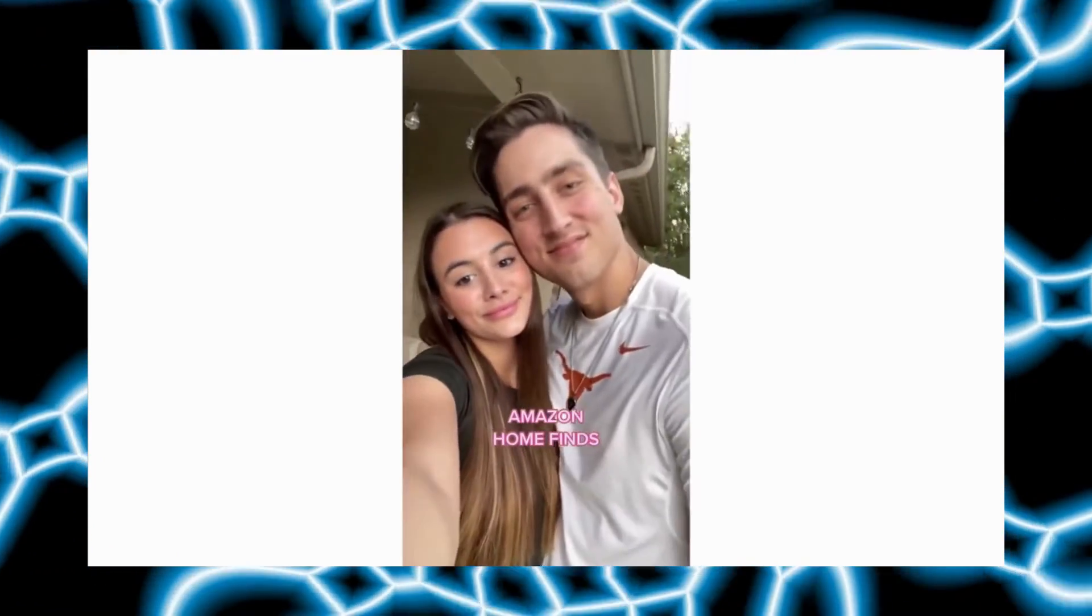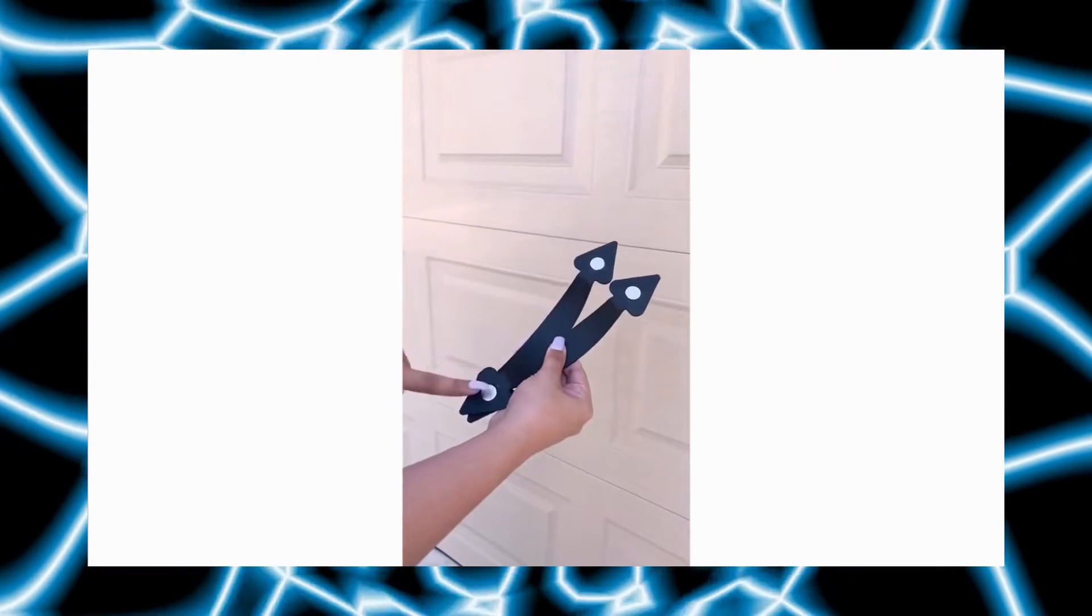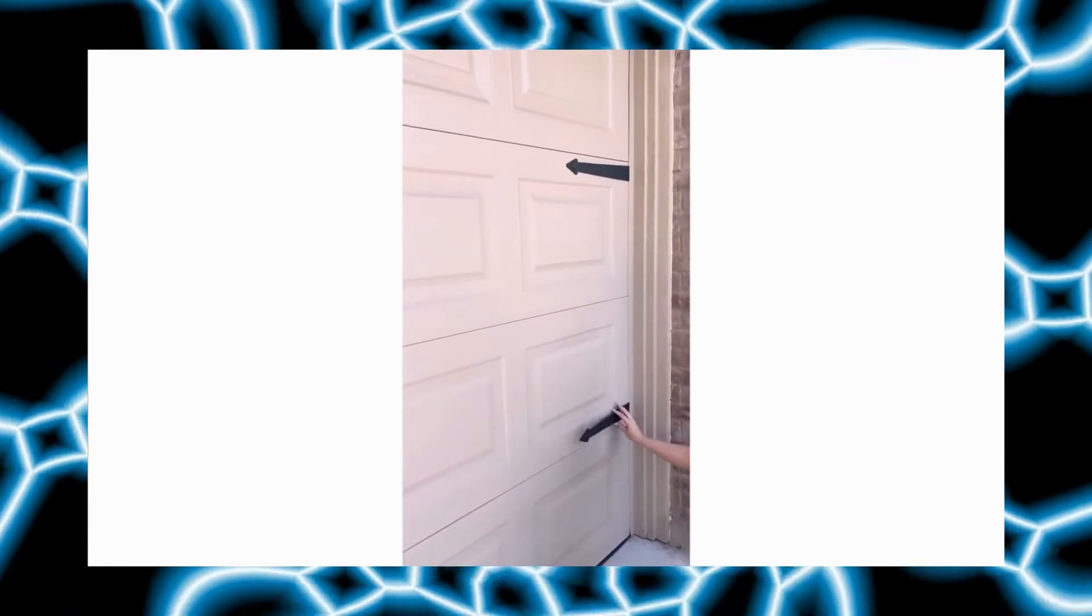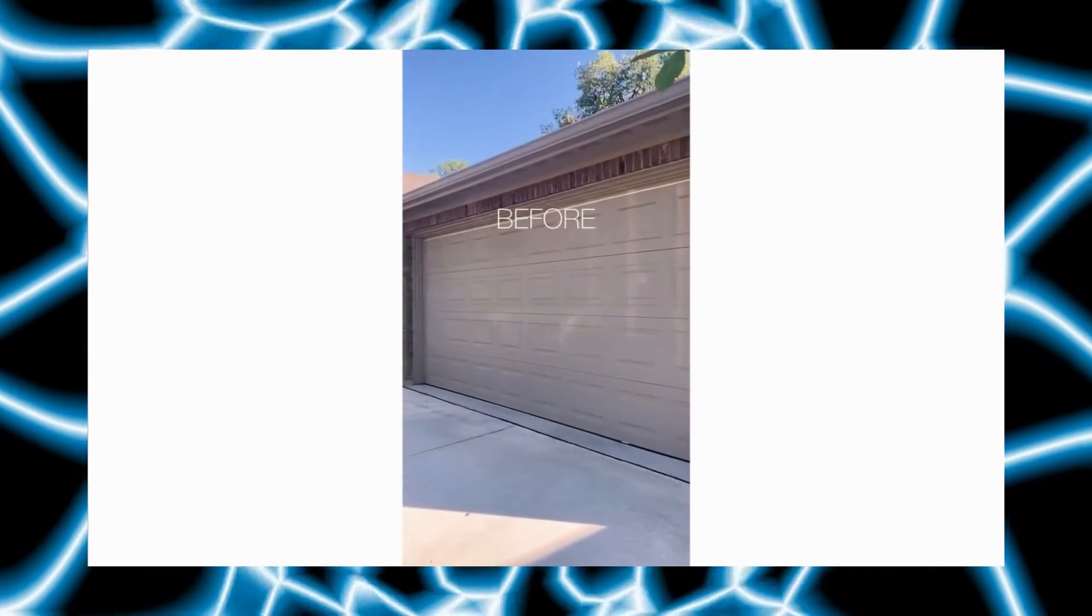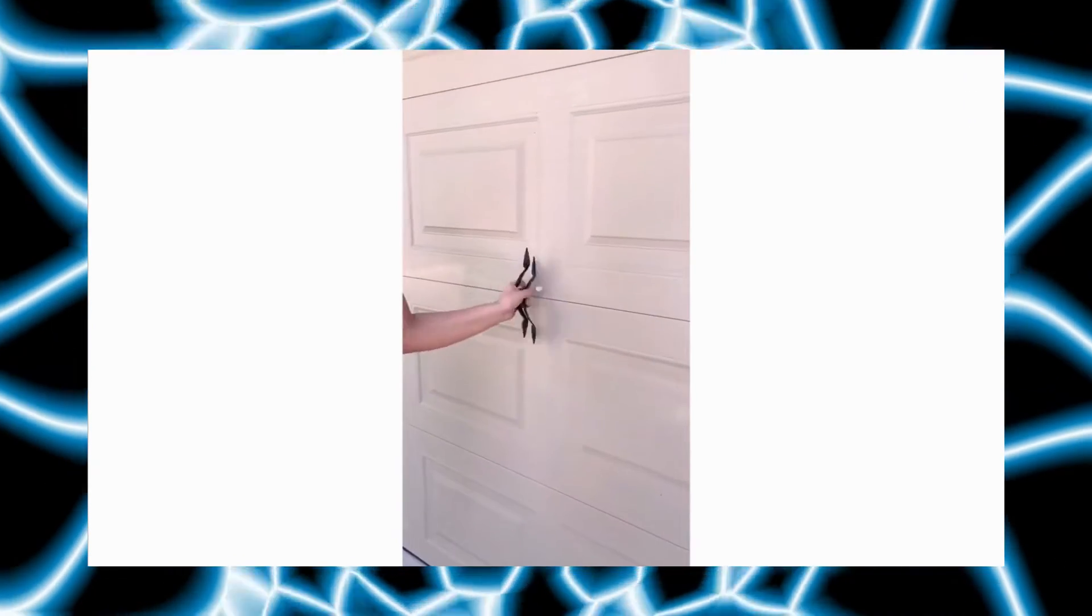Amazon home finds. Okay, I decided our garage door needed a little bit of an upgrade. I found this magnetic garage door hardware set that costs only $11. Obviously I had to get them. You get four hinges and two handles in the set. They snap onto the garage door super easily and they're UV and weather resistant. I mean, look at the before and after. It literally took me the length of this video to install them and I couldn't be more pleased.